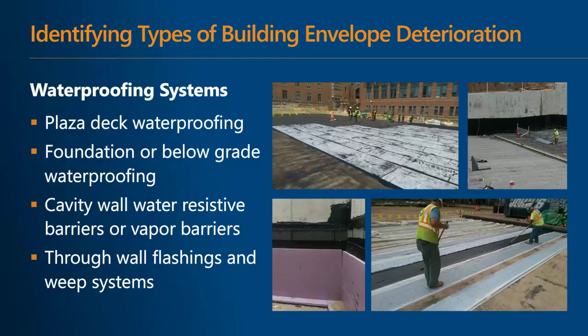There are many types of plaza level, below-grade, and under-slab waterproofing systems available. Evaluation of their effectiveness is often based on leak history reports, design and installation records, or knowledge of subsurface drainage and water conditions. We can also look at cavity walls, resistive barriers or vapor barriers, and their respective through-wall flashings and weep systems.